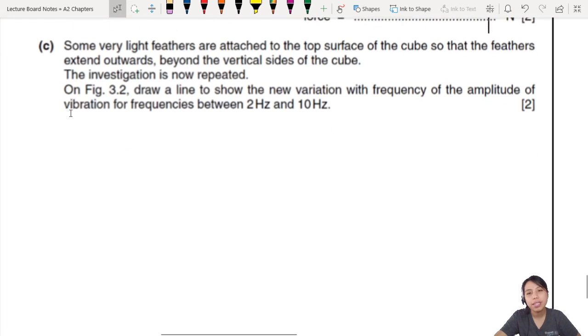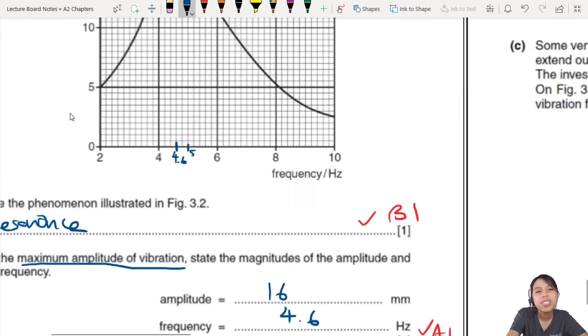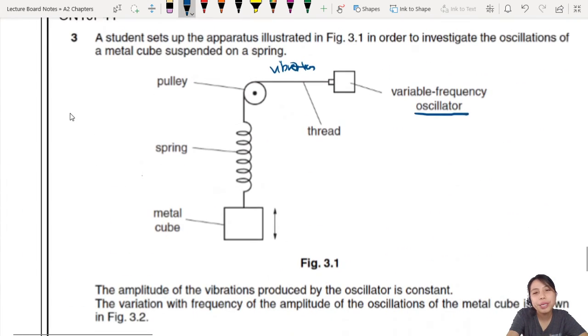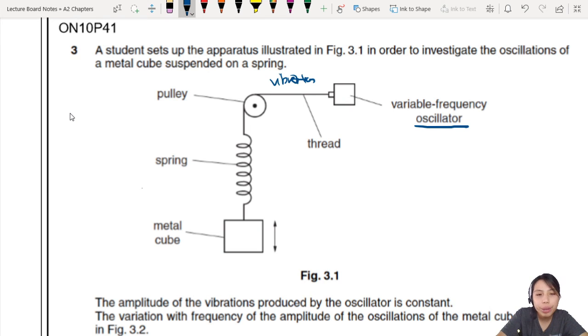Some very light feathers are attached to the top surface of the cube so that the feather extends outwards beyond the vertical side of the cube. The investigation is now repeated. On the graph just now, draw a line to show the new variation of frequency of the amplitude of vibration for frequency between 2 and 10. What feather are they talking about? Well, imagine this thing is going up and down, right? Now they go and put, I don't know, feathers like this maybe, like wings. So, what does that change? Not exactly the mass. But it does change how much frictional force this cube will be experiencing.